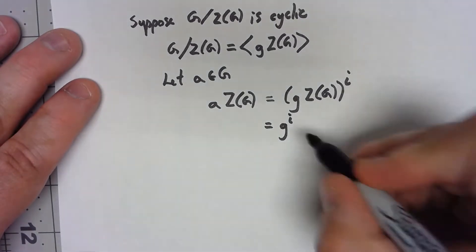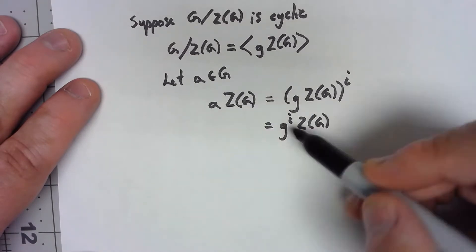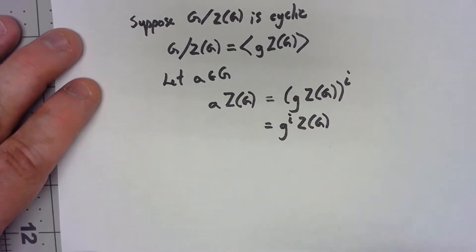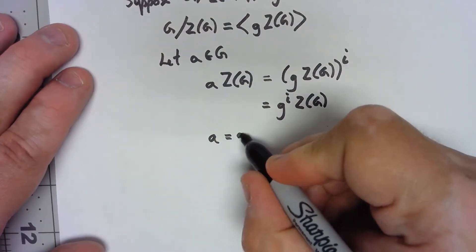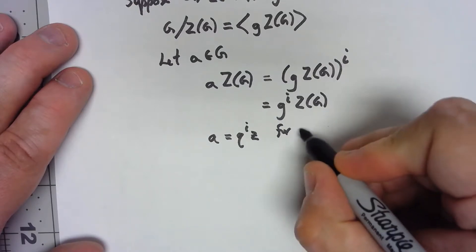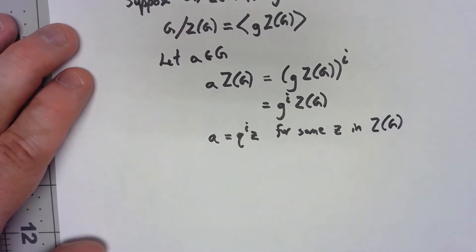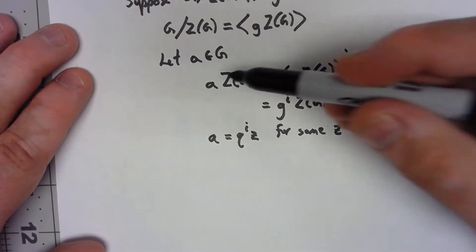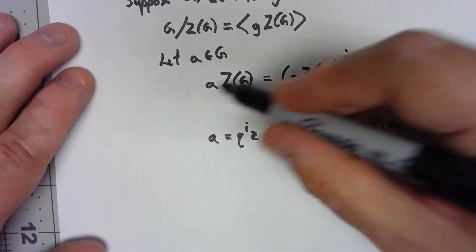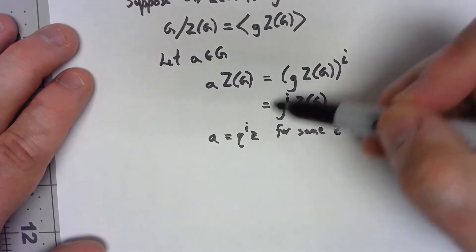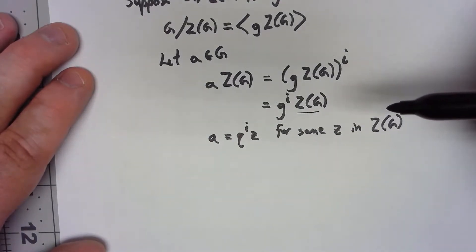Now it would be nice to say that based on this that A has to be G to the i, but that's not quite the case. That just means that A has to equal G to the i times Z for some Z in Z of G. This comes down to the fact that the cosets don't have to be exactly the same. Well, the cosets are the same, but that doesn't mean the individual generator is the same. It just means that this thing in the front has to be different by some member of the subgroup.